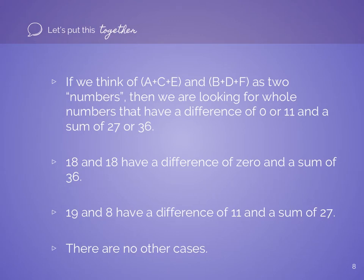So let's put this all together and see if we can use it to solve this problem. Let's think of the quantity A+C+E and the quantity B+D+F as two different numbers. We're looking for whole numbers that have a difference of 0 or 11 and also have a sum of 27 or 36. 18 and 18 have a difference of 0 and a sum of 36. 19 and 8 have a difference of 11 and a sum of 27. And there are no other cases, so we're only working with these two situations.